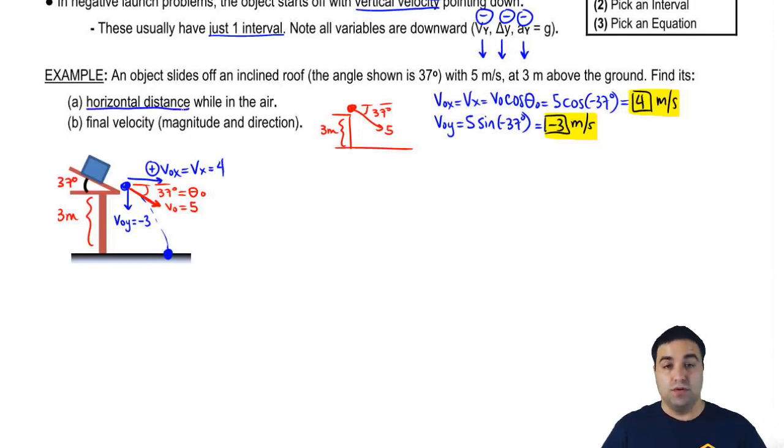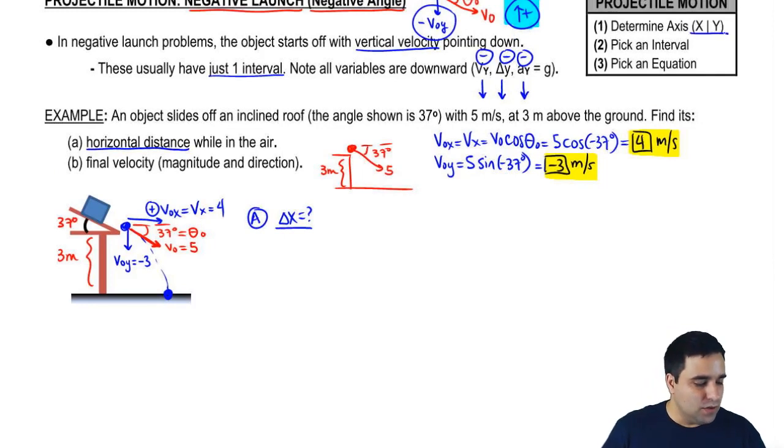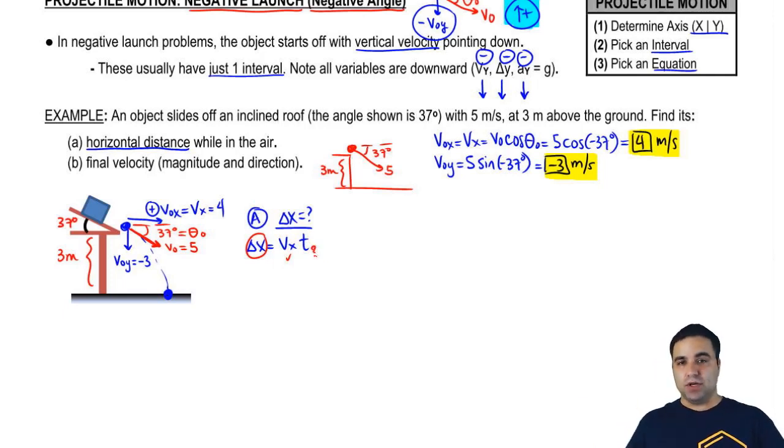So I want to know, the first thing we're looking for is the horizontal distance. Horizontal distance is obviously my delta x. Let's look at the steps. I'm supposed to pick an axis. So obviously delta x is in the x-axis. Pick an interval. There's only one interval. And pick an equation. The only equation that I have for the x-axis is delta x equals vxt. So I'm looking for delta x. All I need is these two variables. And if you look around, I have vx. Vx is four. But I don't have t. And as always, I get stuck in one axis, I'm going to go to the other one. So I'm going to go now to the y-axis looking for t.